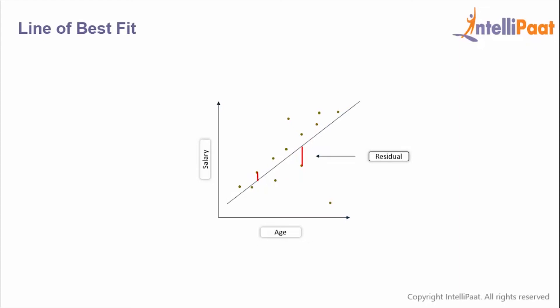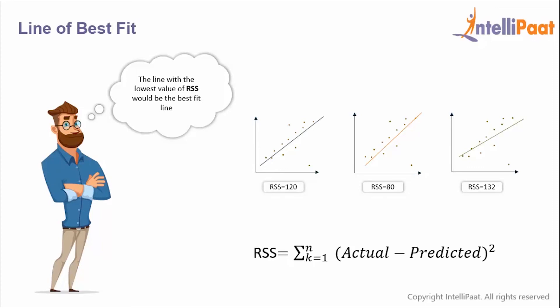So this red line which you see over here denotes the residual value, which is nothing but the difference between the actual values and the predicted values. Now to find out the best fit line, we have something known as residual sum of squares.